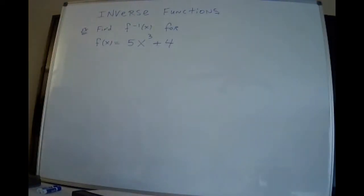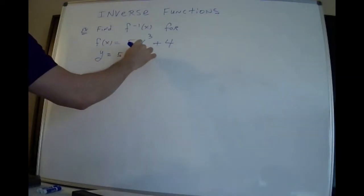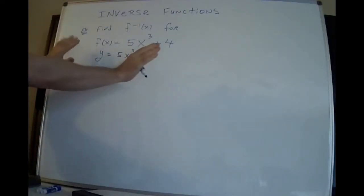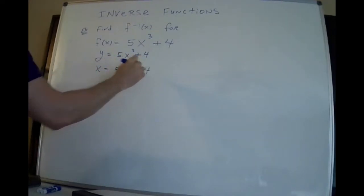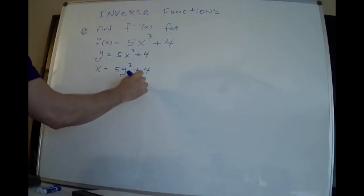Alright, so the first step for finding the inverse is to replace f(x) with y. I mean, f(x) is y, so not a big deal. Now, this is the important, this is like the most important step of the whole thing. Everywhere you see x, you have to put y. And everywhere you see y, you have to put x. So basically, just trade them. And now, you solve for y. So get y alone on that side.